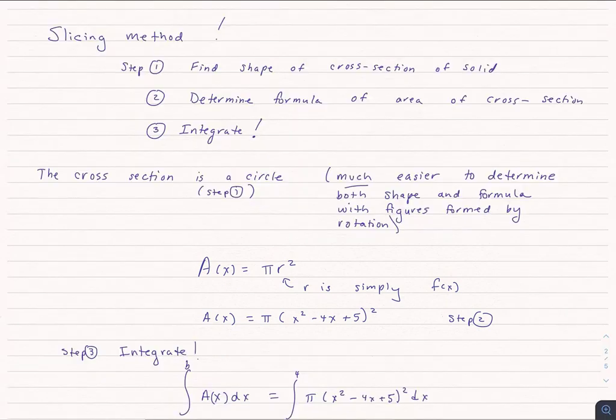So always if we're dealing with a cross section of a solid that's caused by a function rotated around, in this case we're talking about the x-axis, the area is always going to be pi r squared or pi times f of x squared, because f of x is our radius. In this case we have that the area is equal to pi times x squared minus 4x plus 5 all squared.